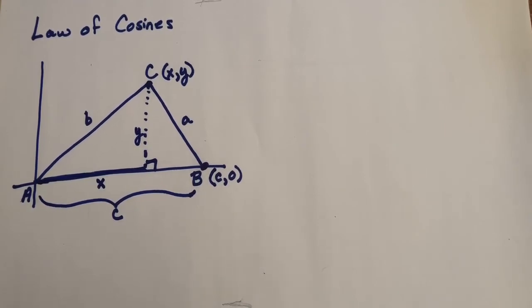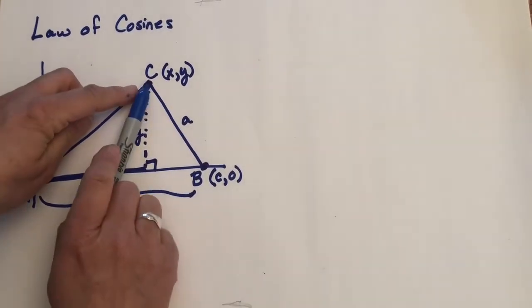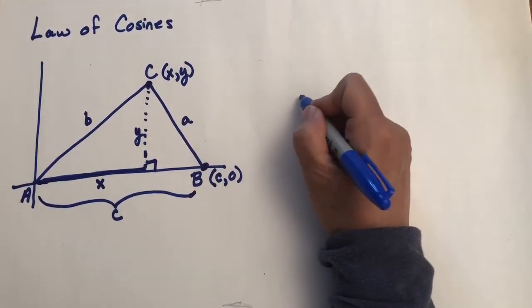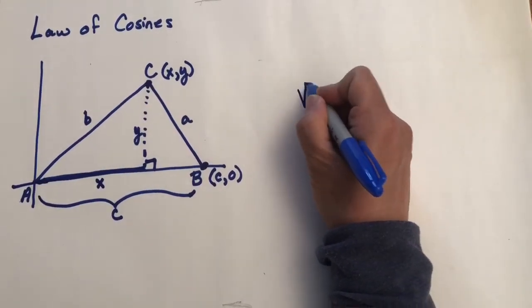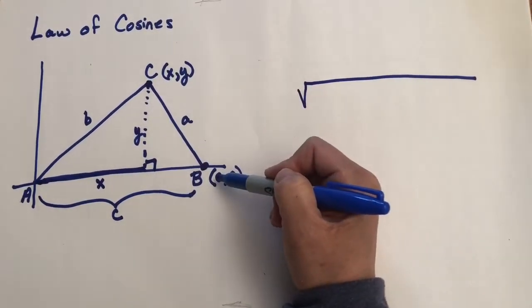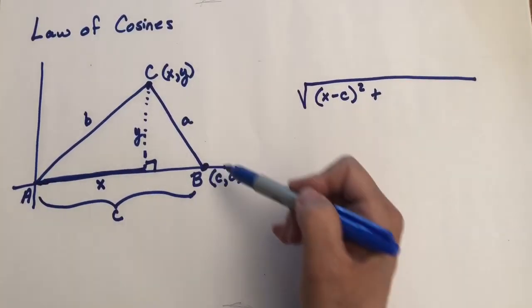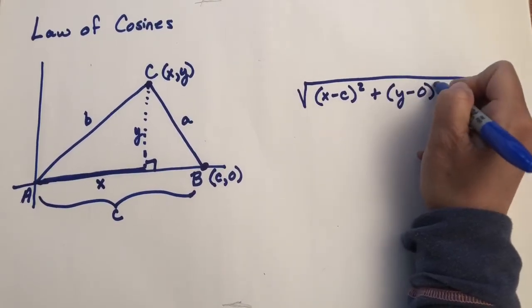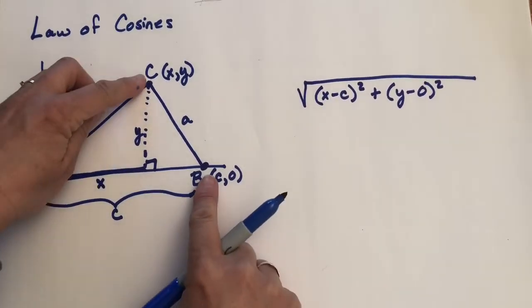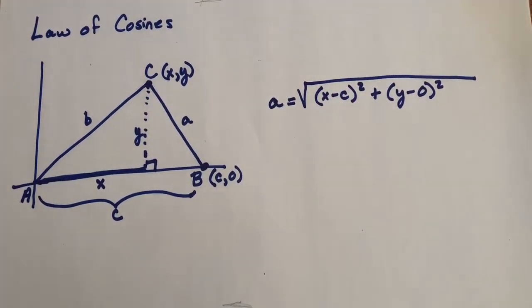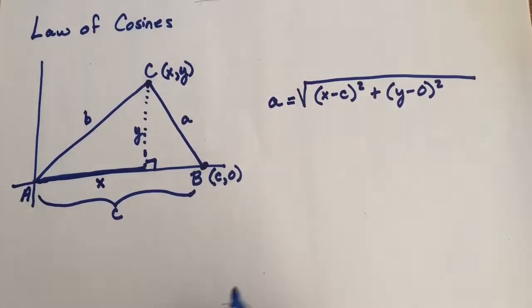Now let's use our distance formula. This is the key to coming up with the law of cosines. We're going to use the distance formula with these two points, and we'll be finding this distance. But we know that distance is A. So let's use our distance formula, which says the distance between two points is the square root of X2 minus X1 squared, which in this case is X minus C squared, plus Y2 minus Y1 squared, which is Y minus 0 squared. And so this is our distance between these two points, but we know that that distance is A. So let's set it equal to A.